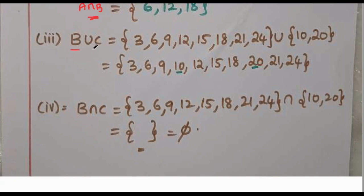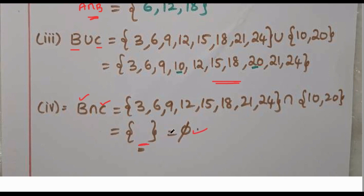B union C combines all elements in B and C. B intersection C contains elements common to both B and C. Since B and C share no common elements, B intersection C is the empty set.